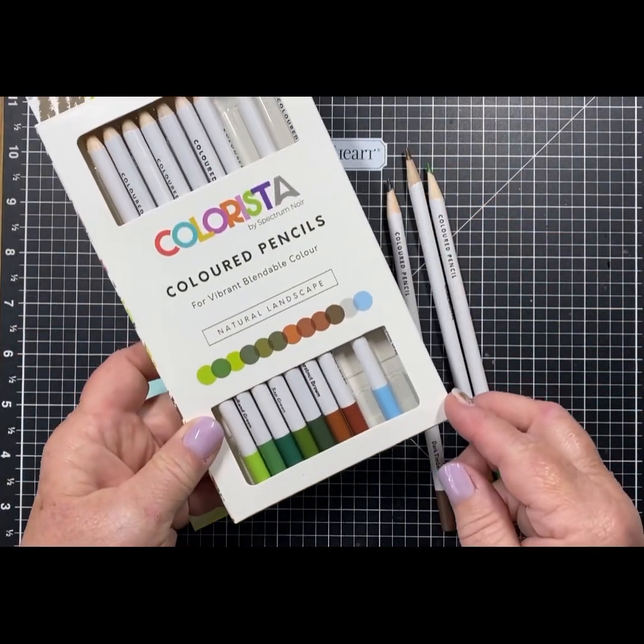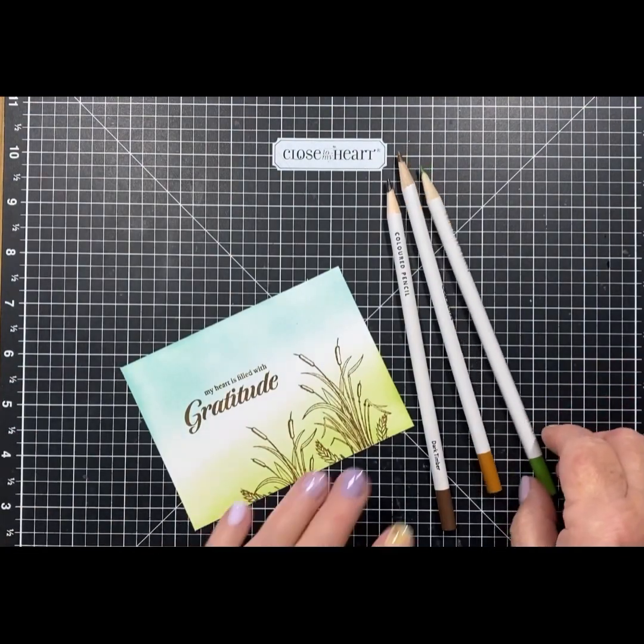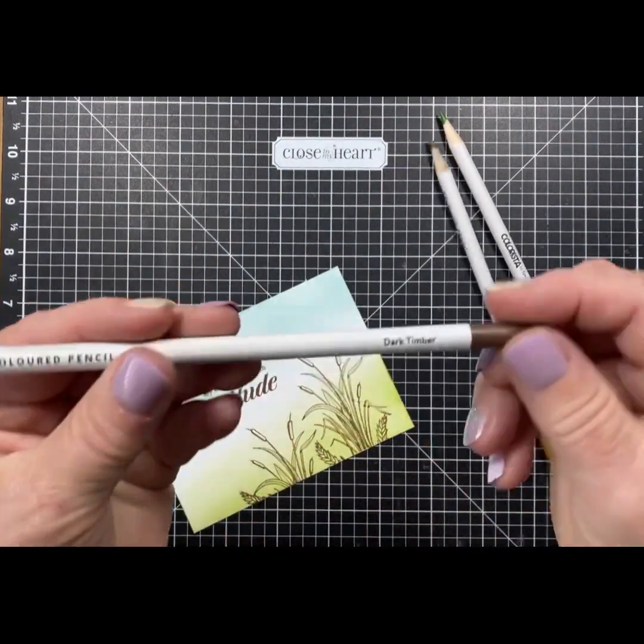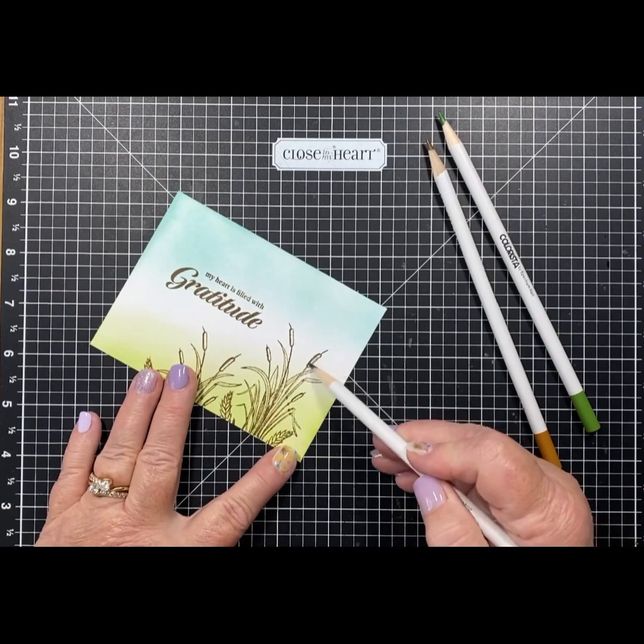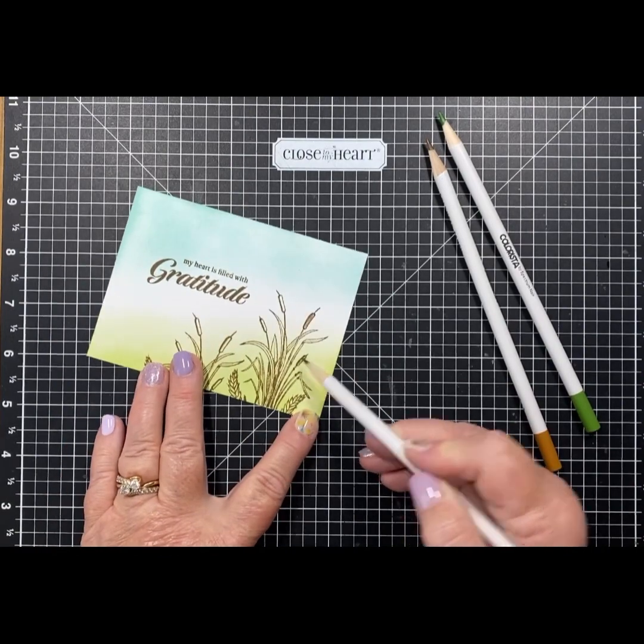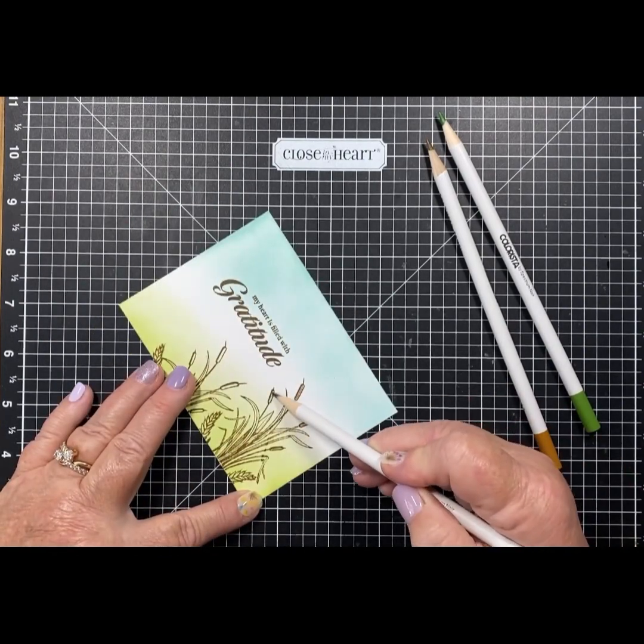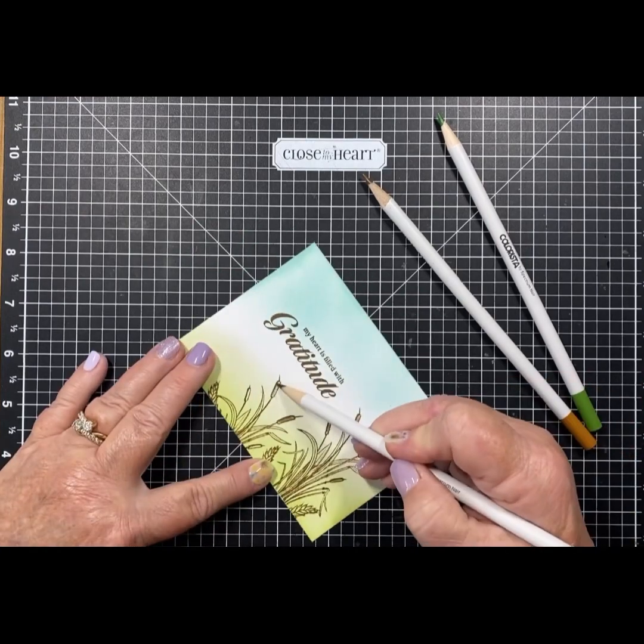I'm going to be using my Colorista colored pencils to color these cattails and wheat. First, I'm grabbing dark timber to do the cattail ends. It's the perfect color for those cattails.